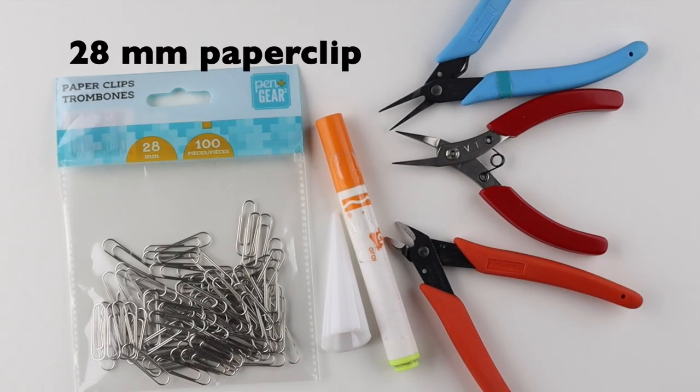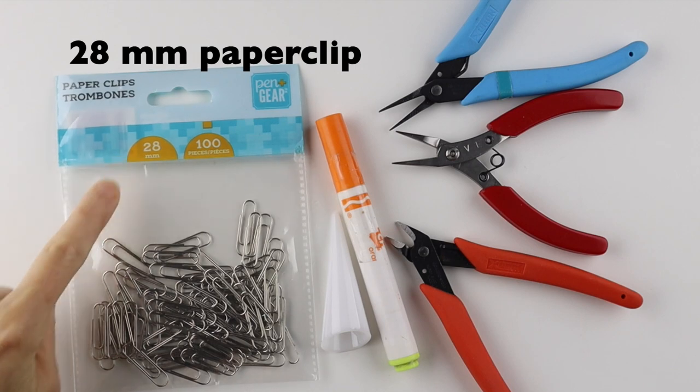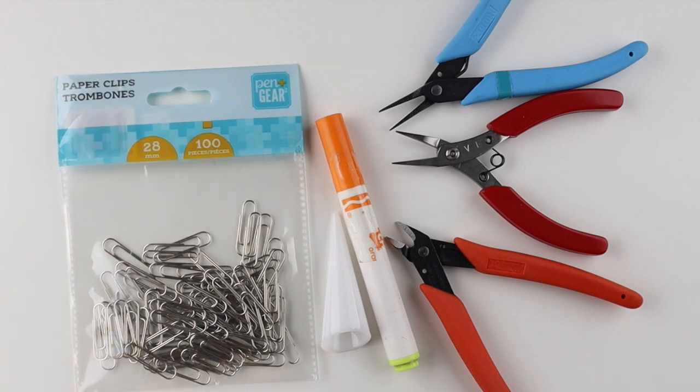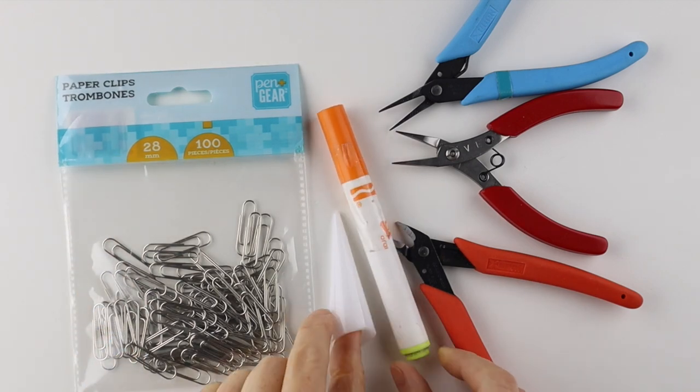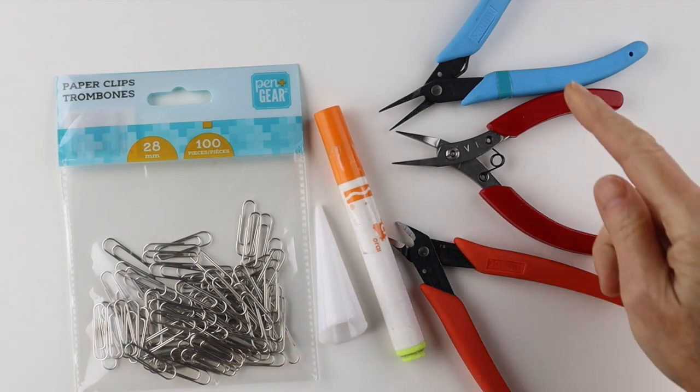For the paperclip rings, I use the 28mm regular sized paperclip. You need a round form, so a marker or a ring cone, and your tools.